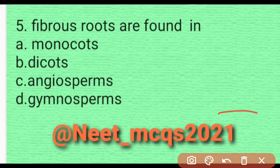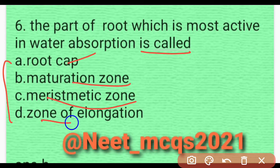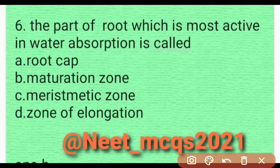Question 5: The part of the root which is most active in water absorption is called — four options are given: root cap, maturation zone, meristematic zone, and zone of elongation. For active water absorption, the maturation zone is responsible. Option B is correct.